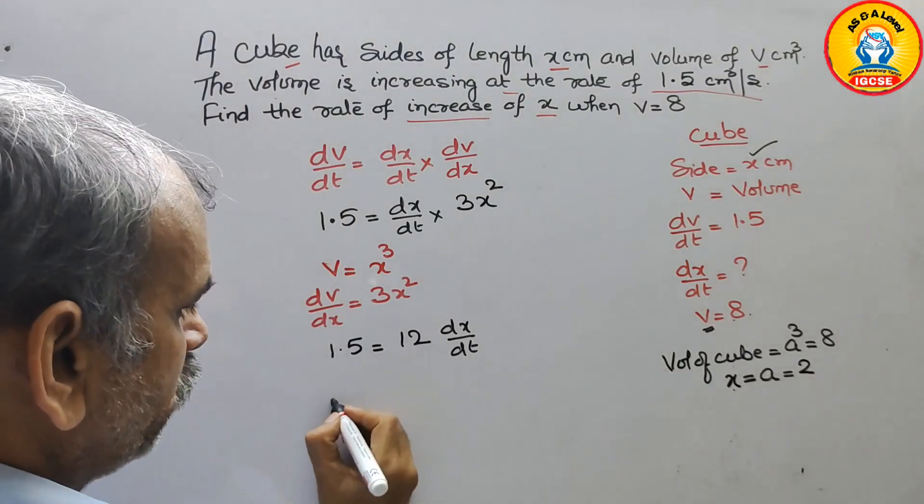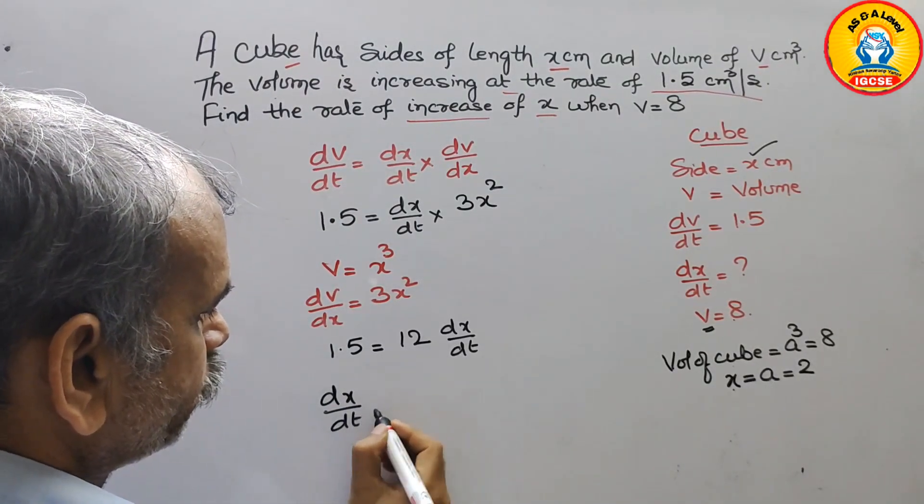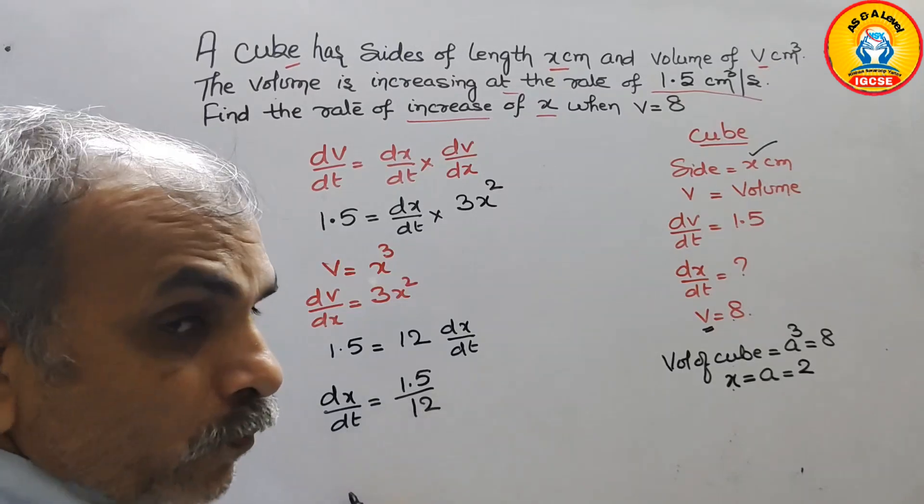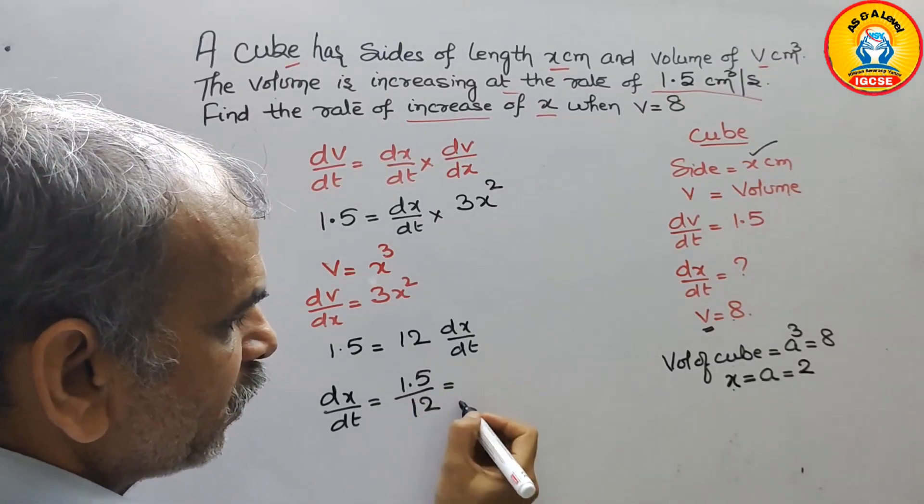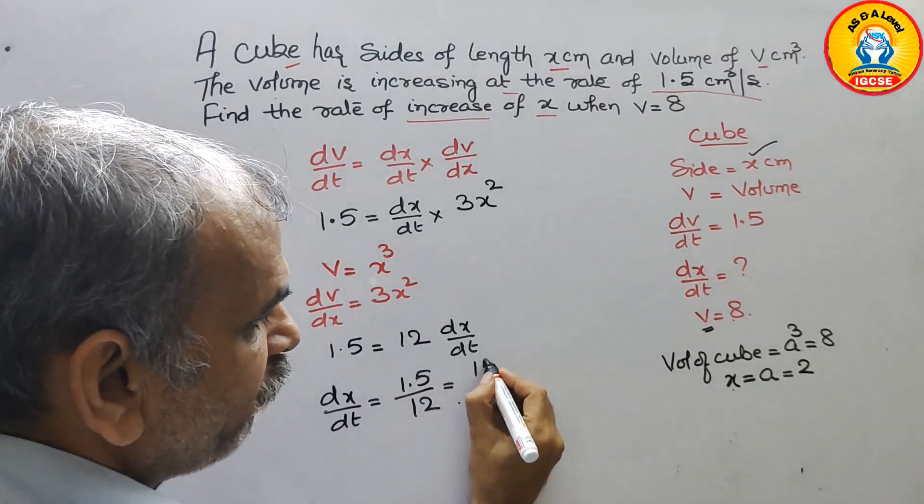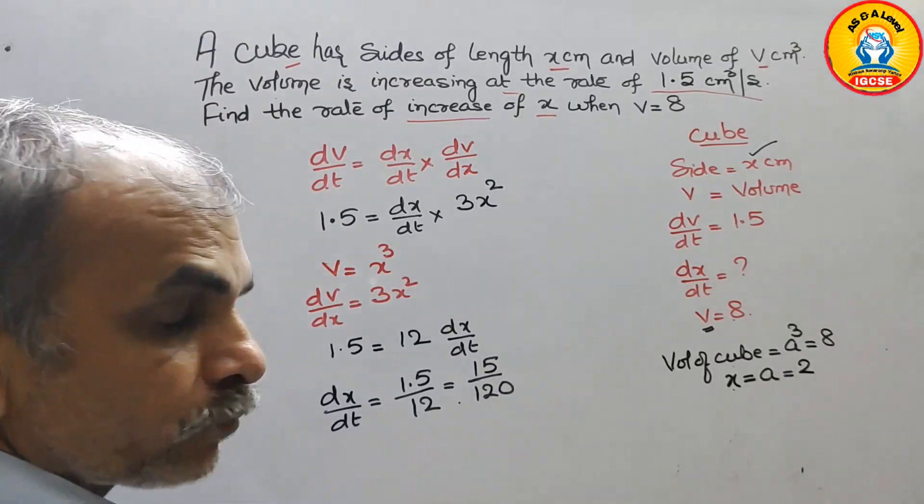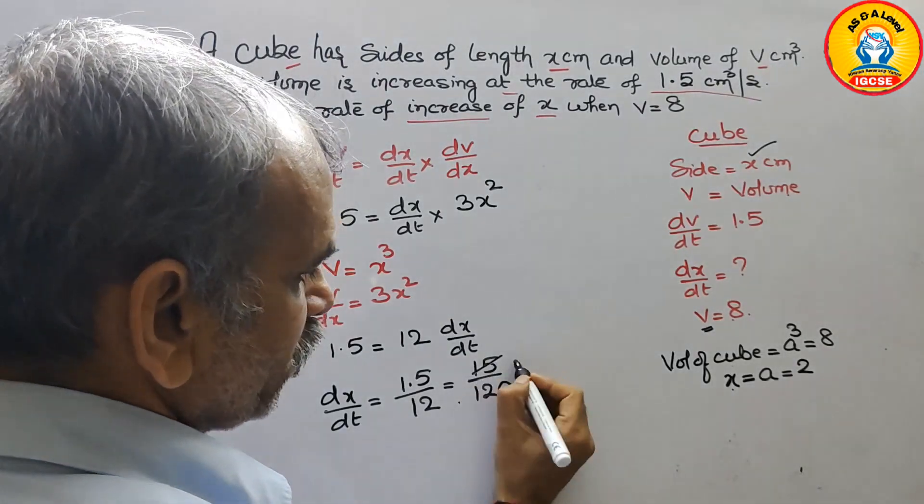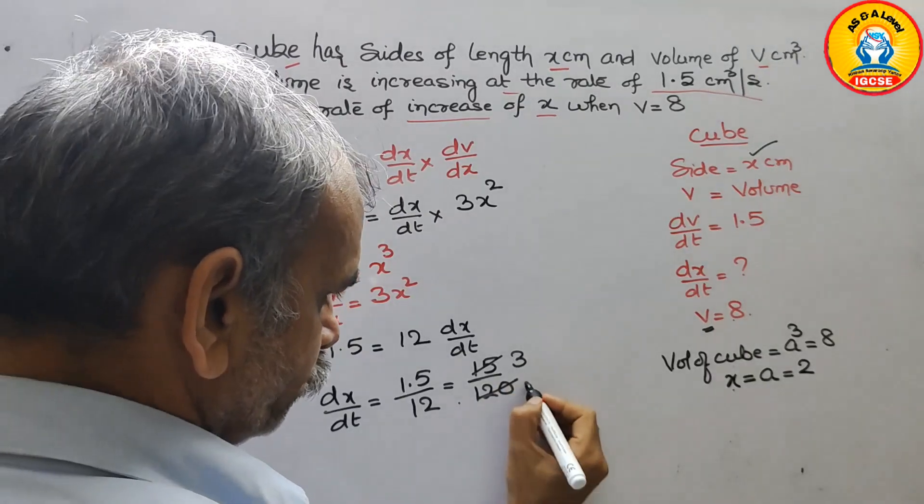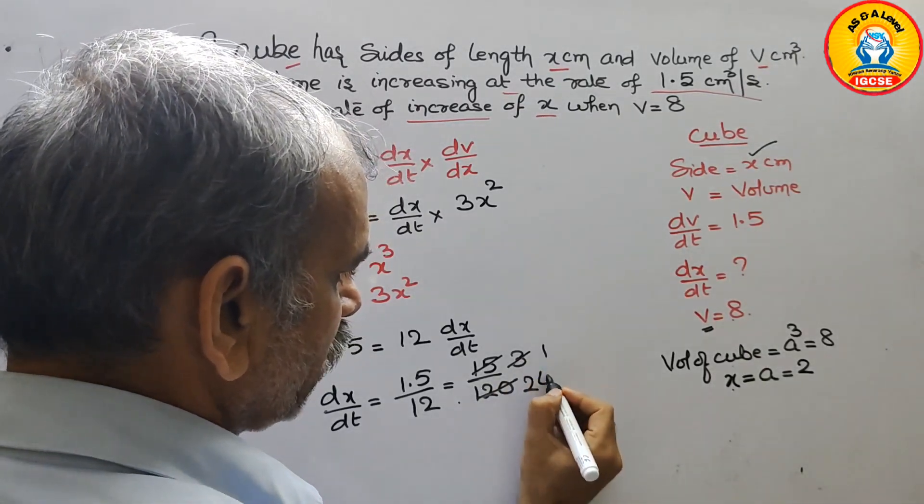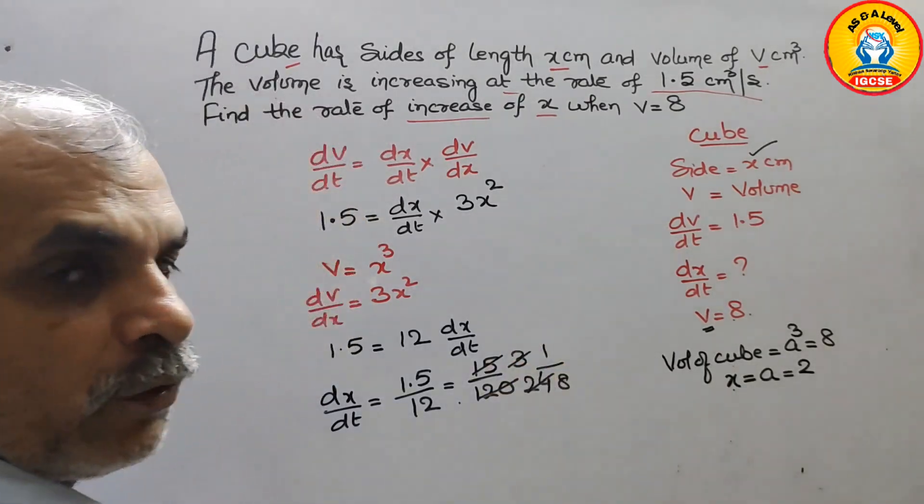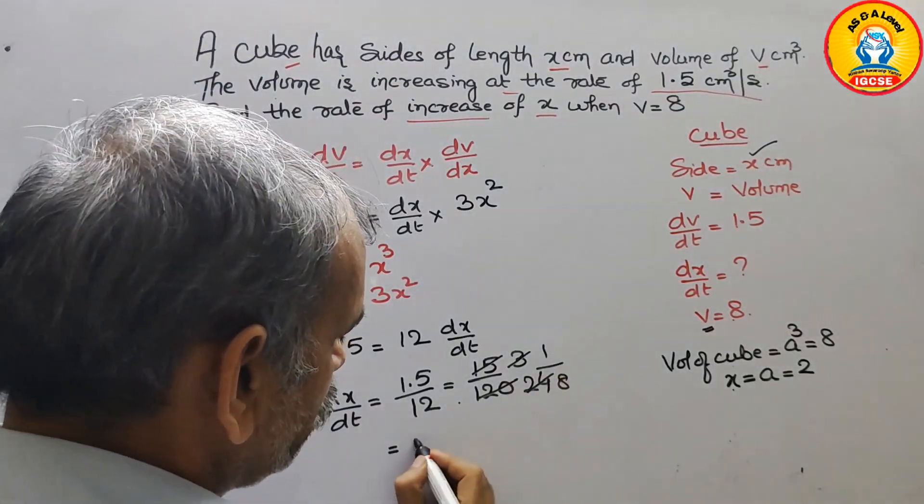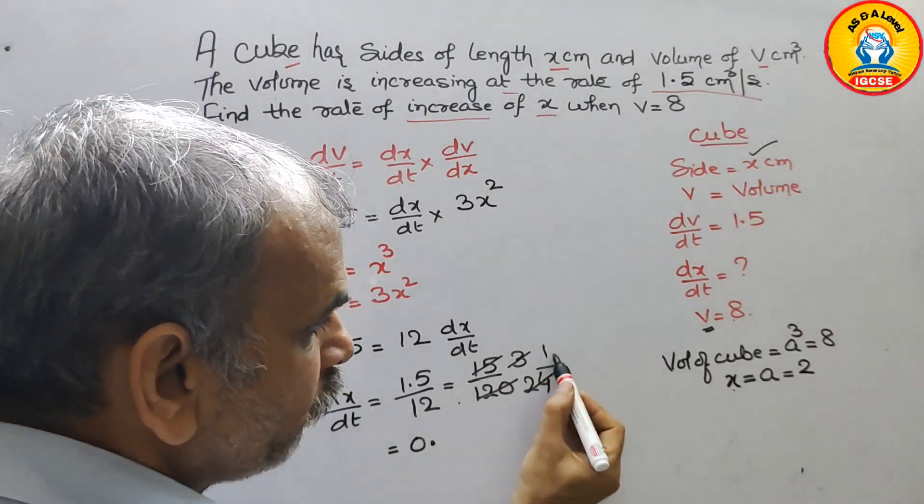Now dx by dt is what? So we can say 1.5 divided by 12. Point is here. So we can put 0 here. So we can say 15 by 120. Now reduce: 5 times, so that means 3 and 24. Next 1 and 8. So 1 divided by 8, what we will get? First we will get 0. Then we will put point. So it will become 10.